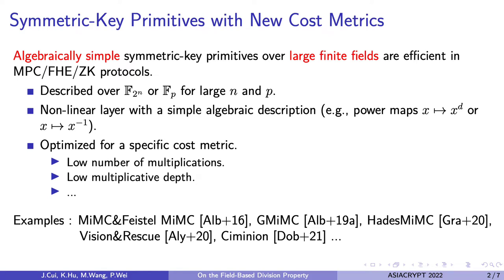These primitives usually work over large binary extension field F2^n or large prime field. Since the size of the field is large, the S-box cannot be pre-computed or pre-stored as in traditional designs. So they have simple algebraic representations like power maps x maps to x^n or the inverse of x.